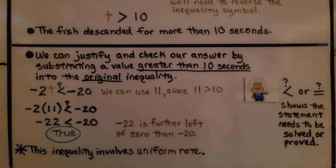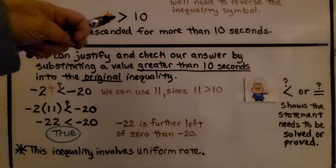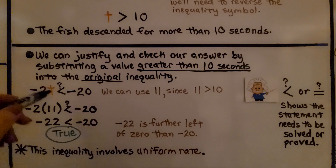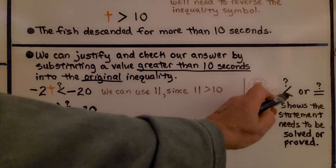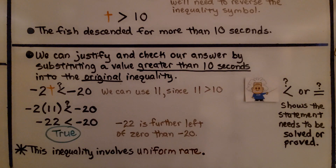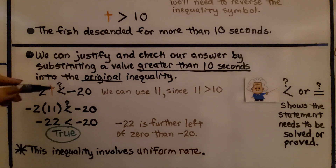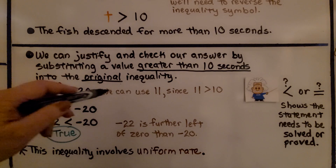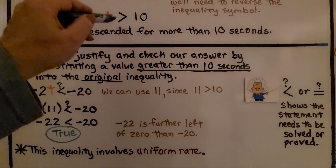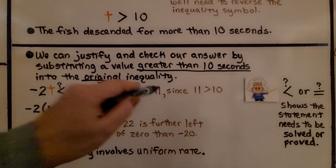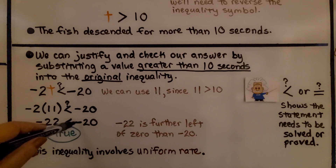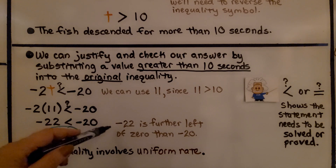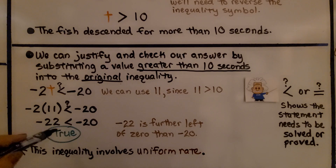We justify and check our answer by substituting a value greater than 10 into the original inequality. A question mark above the inequality symbol means the statement still needs to be proved. We had negative 2t is less than negative 20. Using t = 11, since 11 is greater than 10: negative 2 times 11 gives negative 22. Negative 22 is less than negative 20 — that's true, since negative 22 is further left of zero than negative 20.